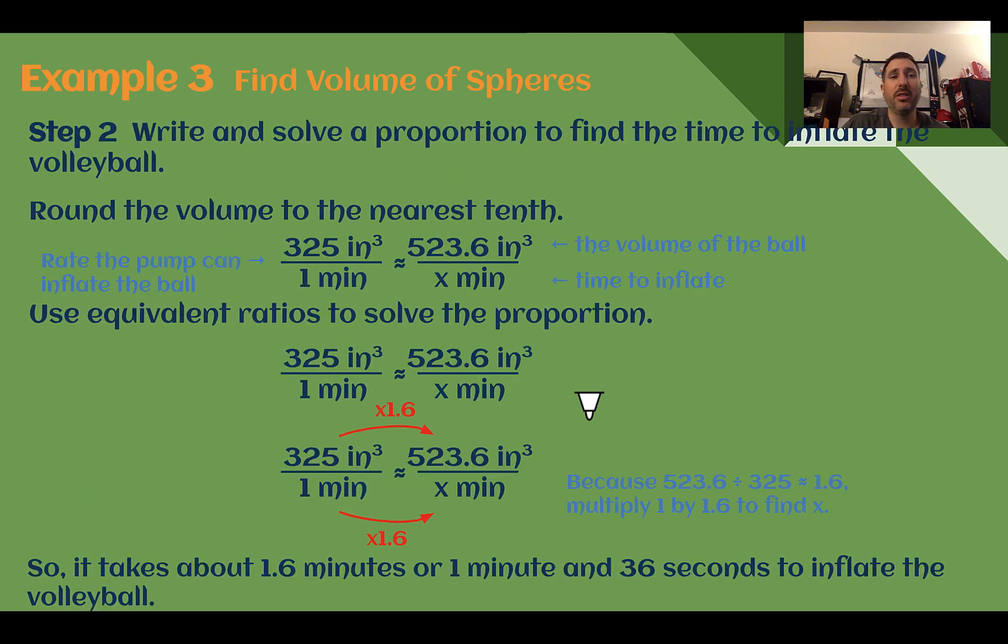Now that we know the volume of our volleyball, we can use a proportion to find the time it would take to inflate it. So we are given a rate of 325 cubic inches every minute. If we need to get to 523.6 cubic inches, how many minutes would that take? So solving this proportion, I can use equivalent ratios, or I can cross multiply and divide. Either way, I'm going to find that it takes about 1.6 minutes to inflate the volleyball. I can just divide 523.6 divided by 325, and I get that value.